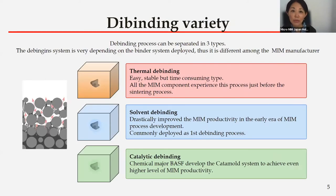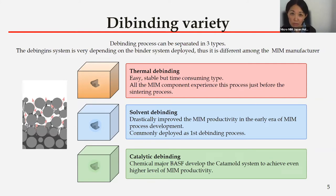These important debinding processes can be categorized into three types according to the debinding solvent or atmosphere: thermal debinding, solvent debinding, and catalytic debinding. Thermal debinding is the oldest process. Soon after the MIM process was developed, the solvent debinding process was introduced. The Wax process is the most famous and helped the MIM industry grow significantly. After that, an even faster catalytic debinding process was invented by BASF. During the early 2000s, this process was widely introduced to Chinese MIM component manufacturers and supported great market development through the mobile phone component manufacturing industry.